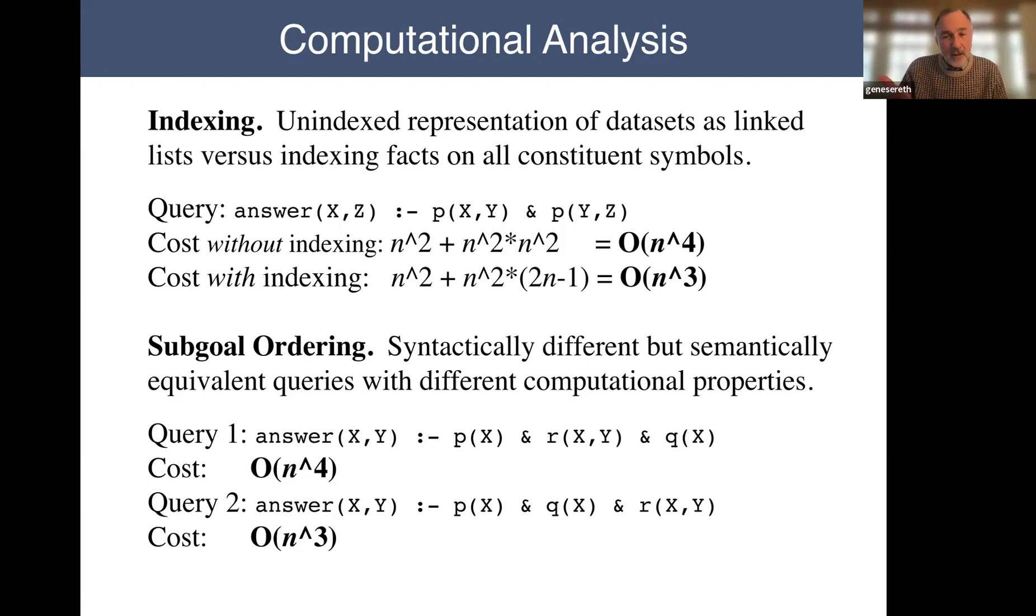We can talk about whether we represent a dataset as simply a linked list of unordered list of facts or whether we order the facts or whether we actually index the facts on each of the symbols in those datasets, each of which then gives us each of those variations, giving us a different computational analysis. So for example, if we don't index this simple query here, that's an n to the fourth computation. But if we do index it, we can decrease that to n cubed and reap a significant savings in execution costs. It also allows us to talk about subgoal ordering as another example of a design decision when one's writing a query. Do we put the, which order do we write the subgoals in, assuming that the execution engine does not rearrange them, or even if it does rearrange them, what would be the consequence of that? So we might see that putting the subgoals in one order would lead again to an n to the fourth versus an n cubed.